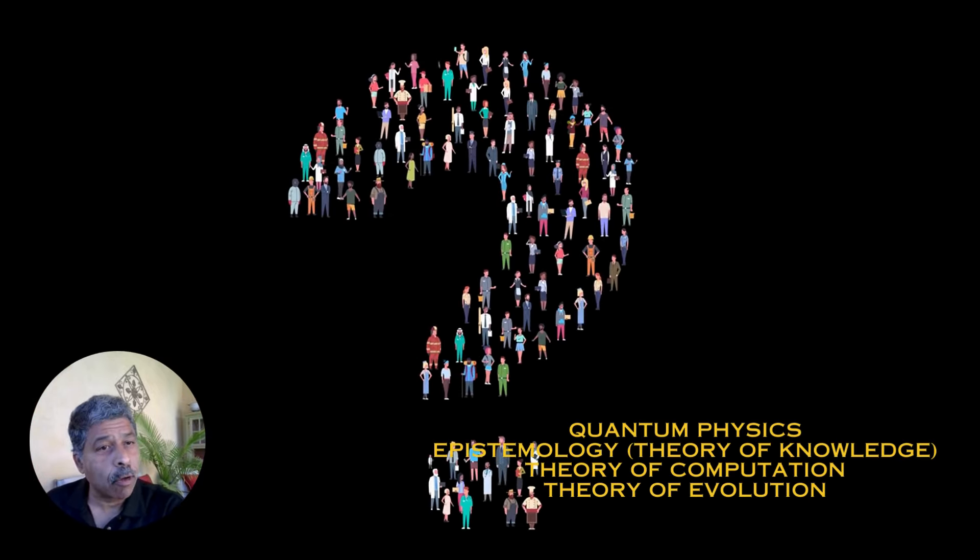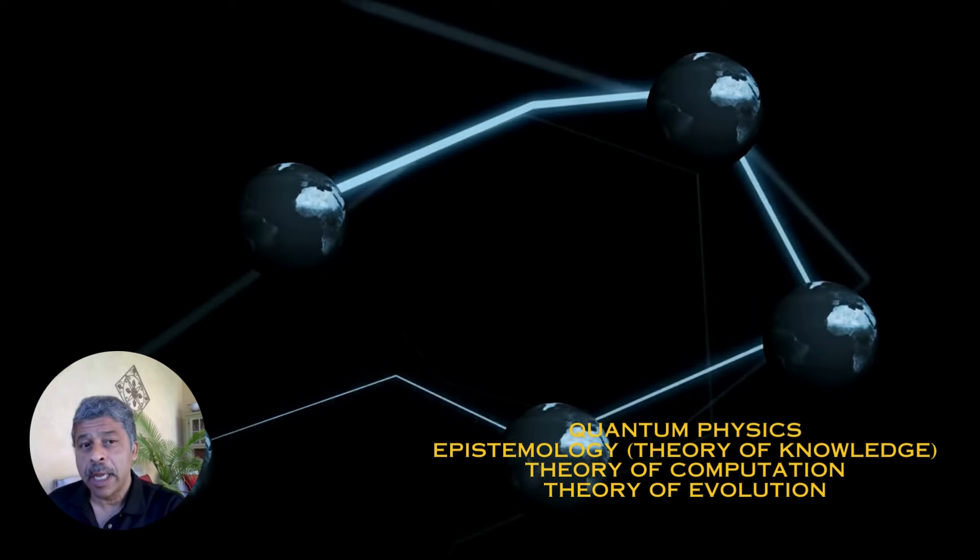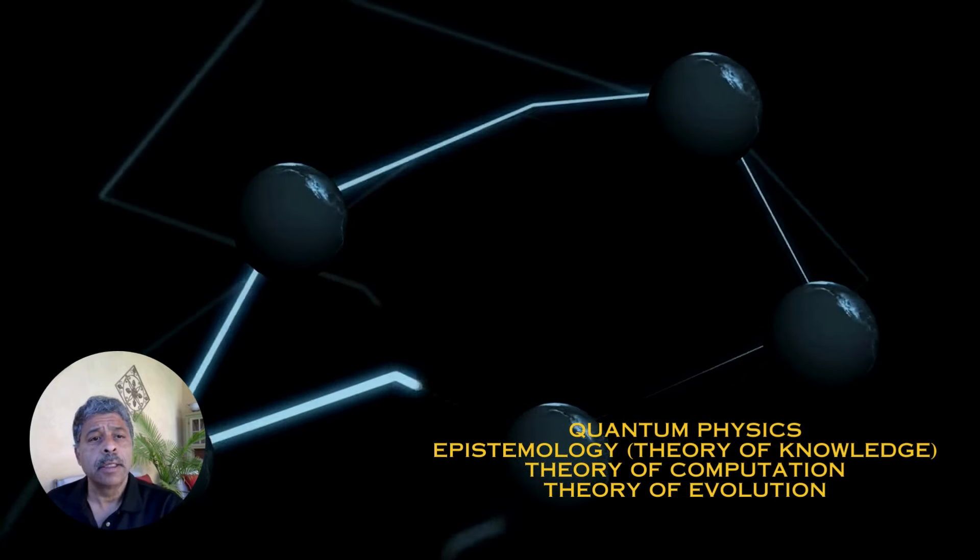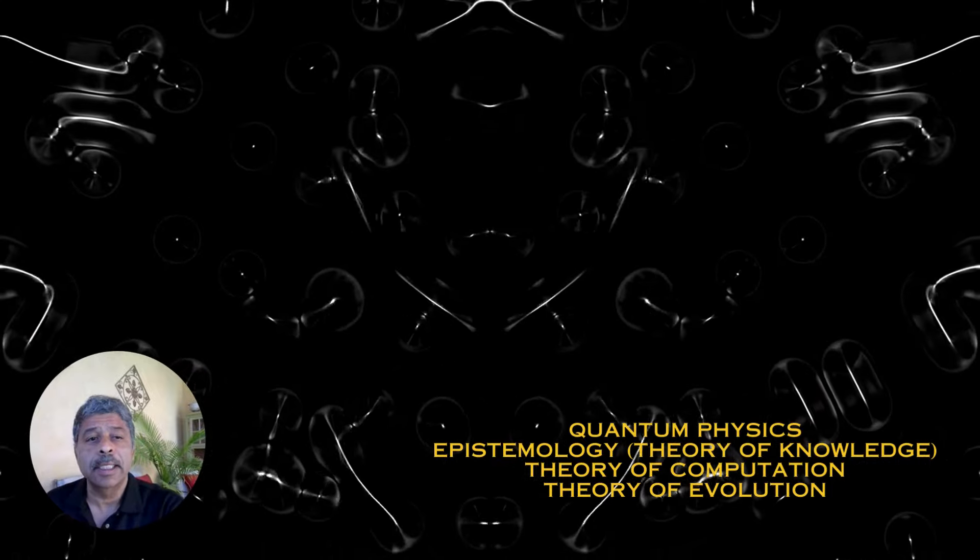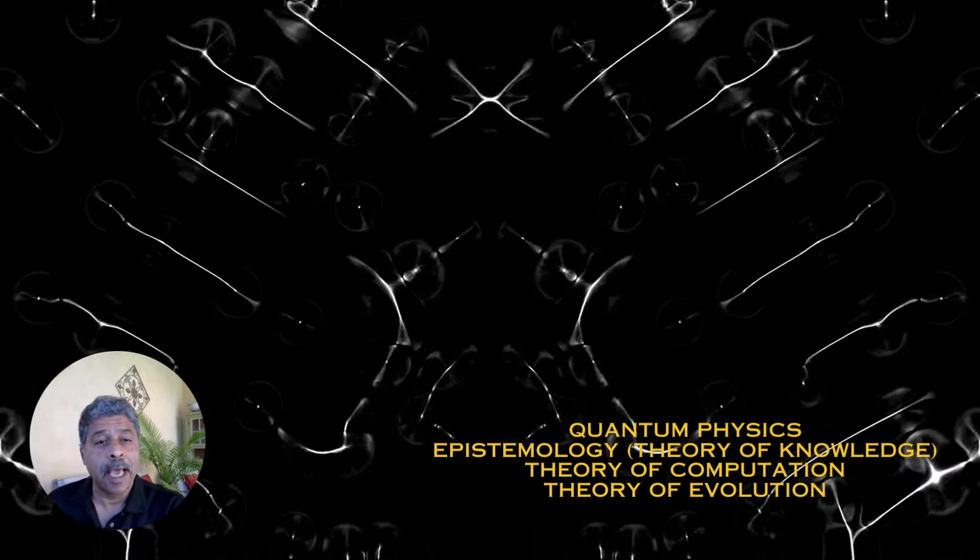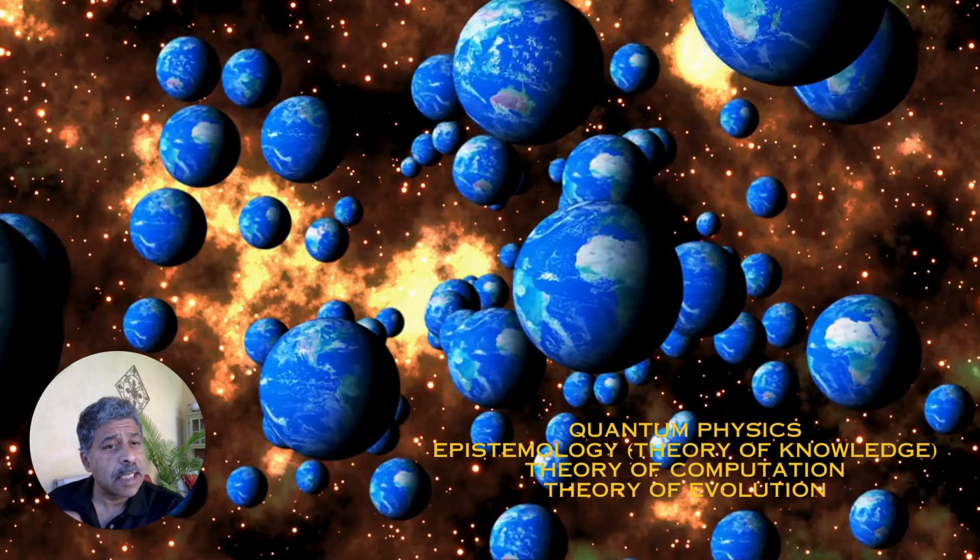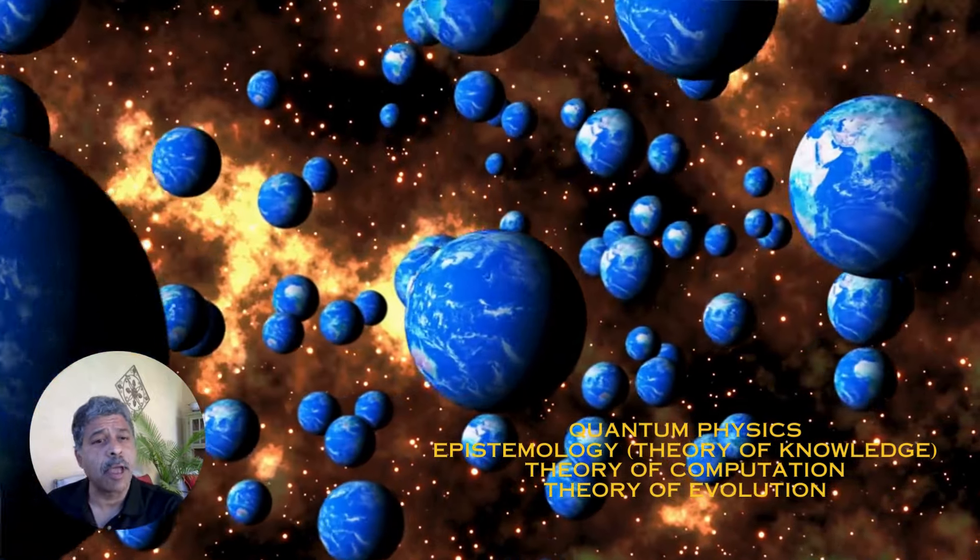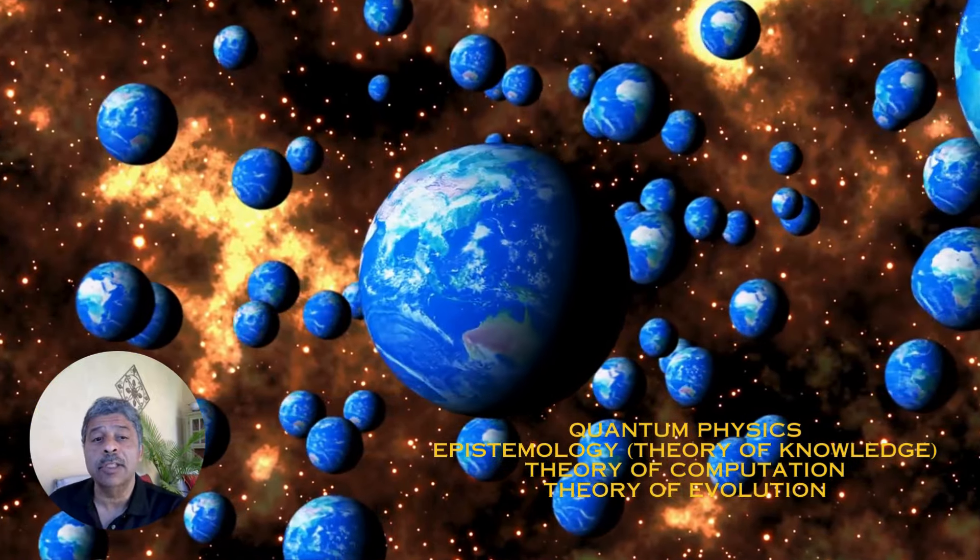Quantum physics, epistemology, which is the theory of knowledge, the theory of computation, and the theory of evolution. As one progresses through the book, the interconnectivity becomes very evident and its ties to quantum physics as well. Deutsch argues that these strands, when woven together, form a sturdy yet intricate fabric that reveals the underlying structure of the universe.